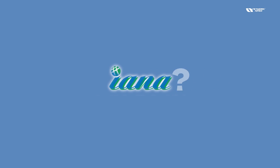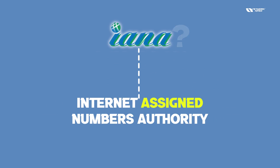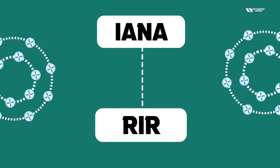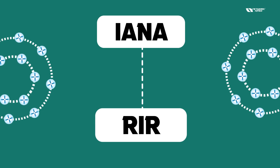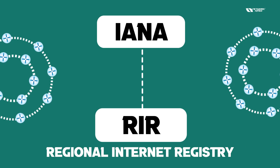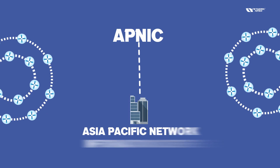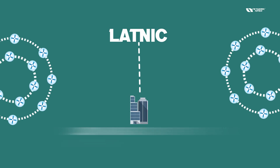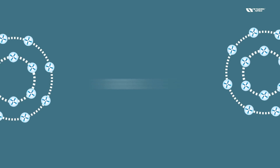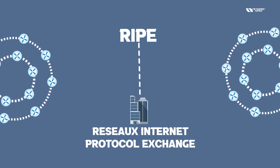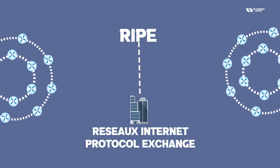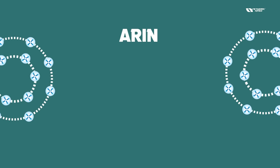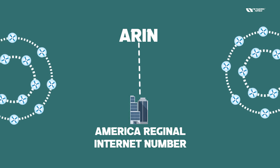IANA stands for Internet Assigned Numbers Authority. Under IANA there are RIRs — Regional Internet Registries. APNIC is Asia Pacific Network Information Center. Then we have LACNIC for Latin America Network Information Center. Then RIPE for Russia and the ex-Internet Protocol exchange region. Then AFRINIC for Africa Network Information Center, and ARIN for the American Regional Internet Numbers.